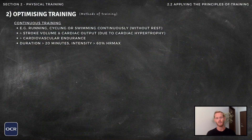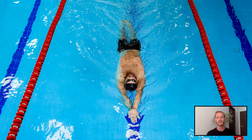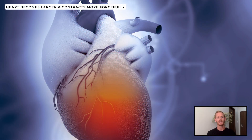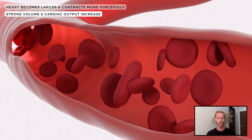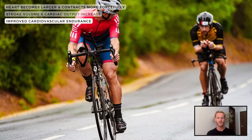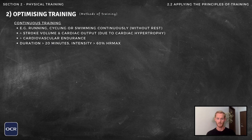You need to know about several different methods of training, the first of which is continuous training. Continuous training typically involves performing large compound movements, like running, cycling, or swimming, continuously or without rest periods. It can increase the size and contractile strength of the heart, leading to improvements in stroke volume and cardiac output, and therefore cardiovascular endurance or stamina. Continuous training should be sustained for a minimum of 20 to 30 minutes to be effective, and heart rate should be maintained above 60% of maximum heart rate throughout.